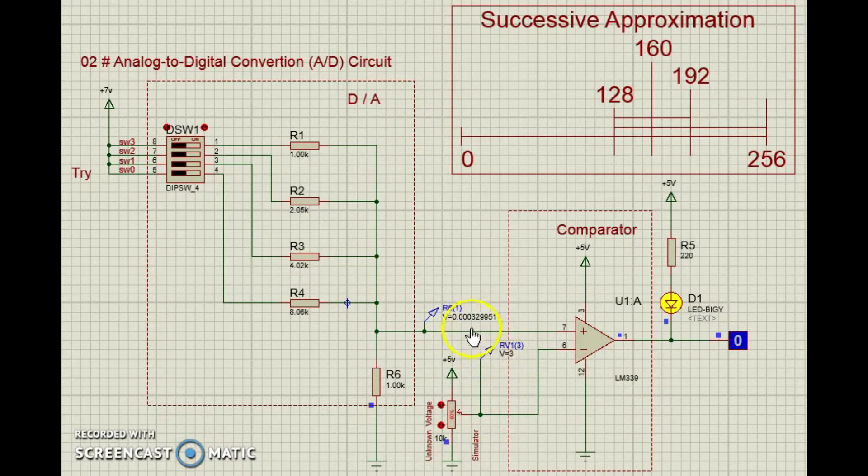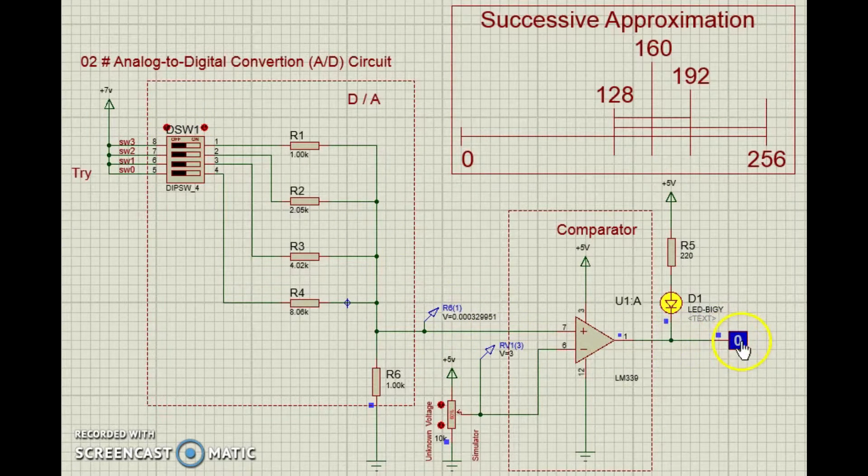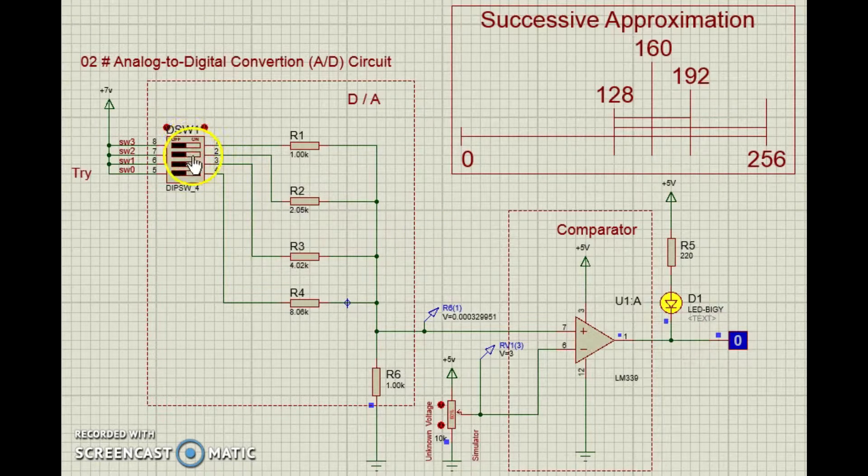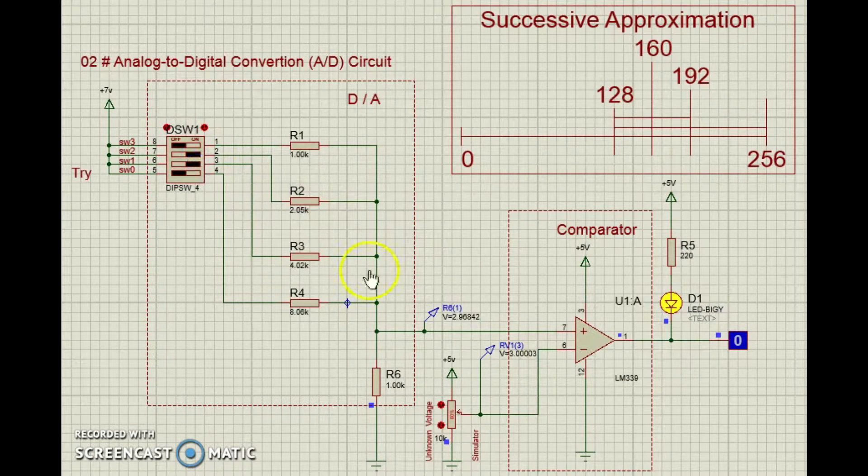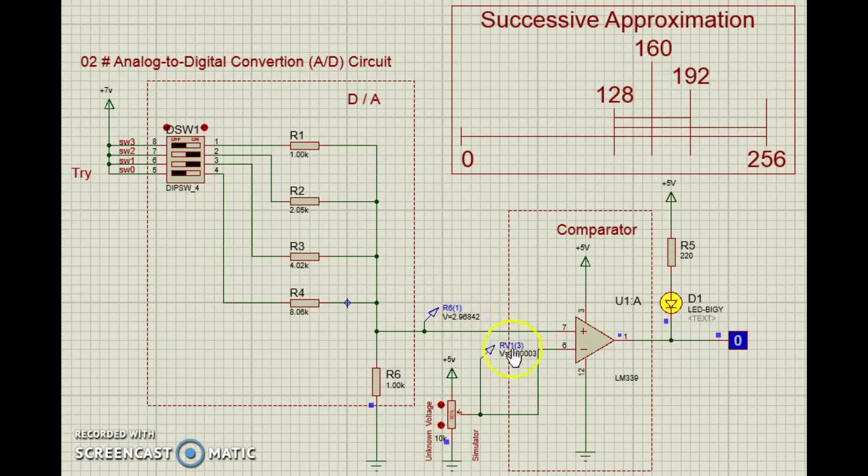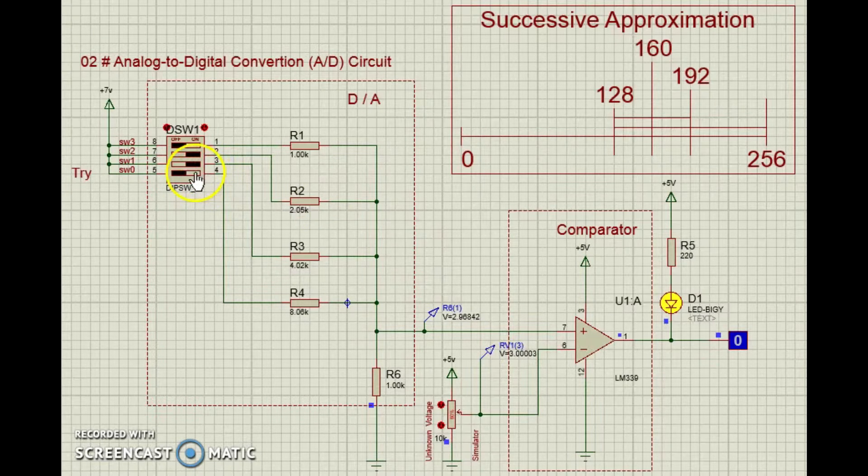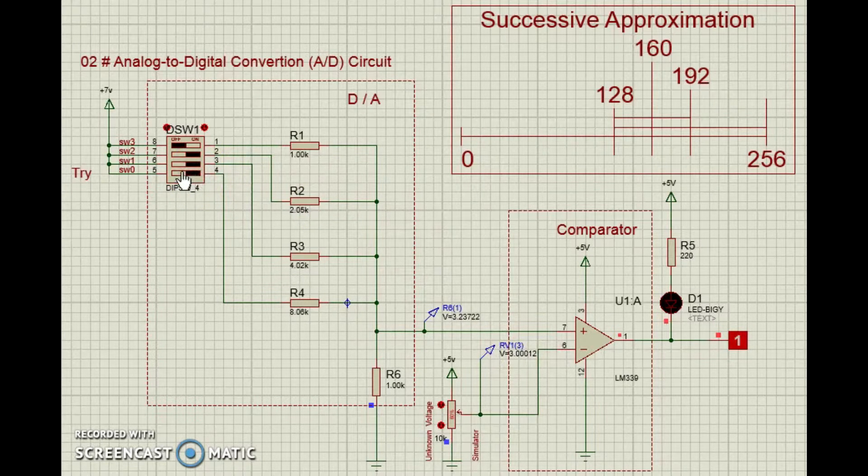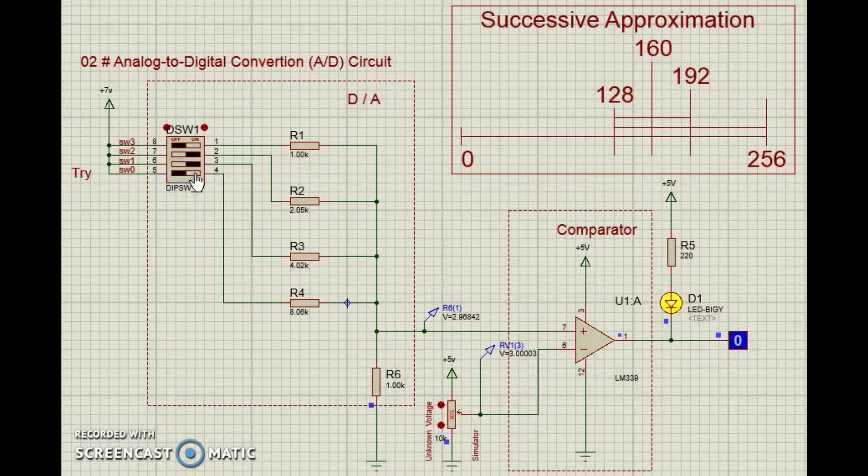If the guess is too high, the comparator output is high. If the guess is too low, the output is low. To find the exact value, you must find a number that results in a low output of the comparator, yet adding only 1 to the number results in the output being high.